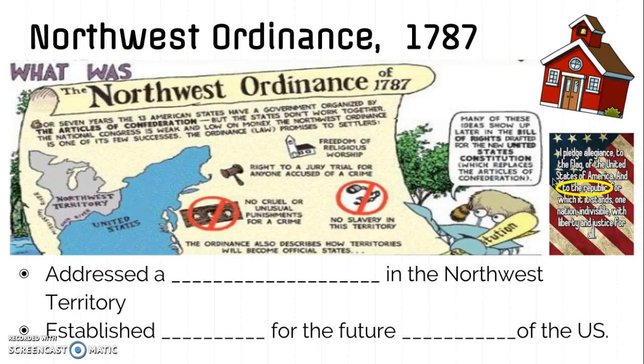That's why the Northwest Ordinance is important: we see these five precedents or laws written down for the first time, and they go on to contribute to our Constitution and Bill of Rights.